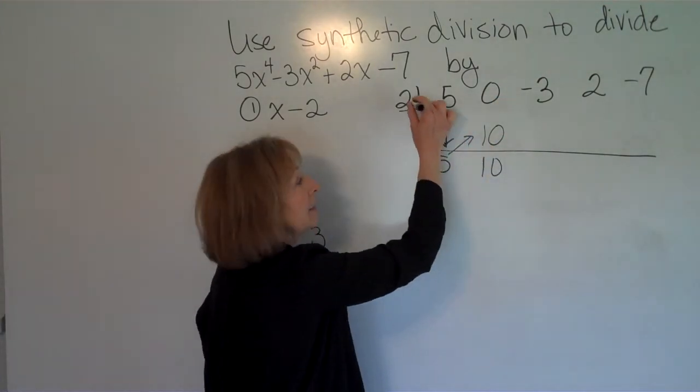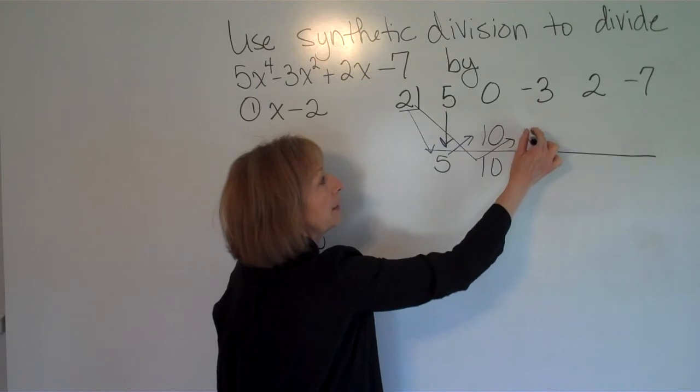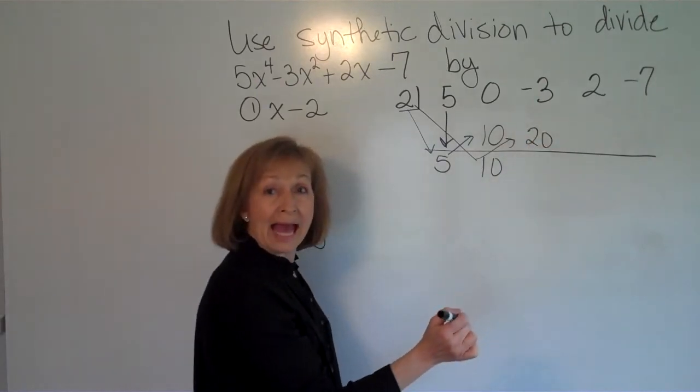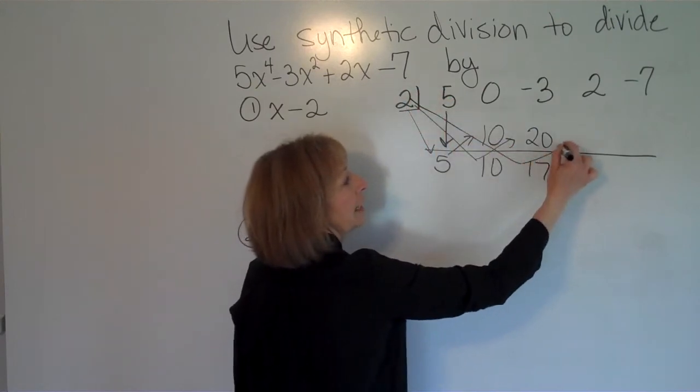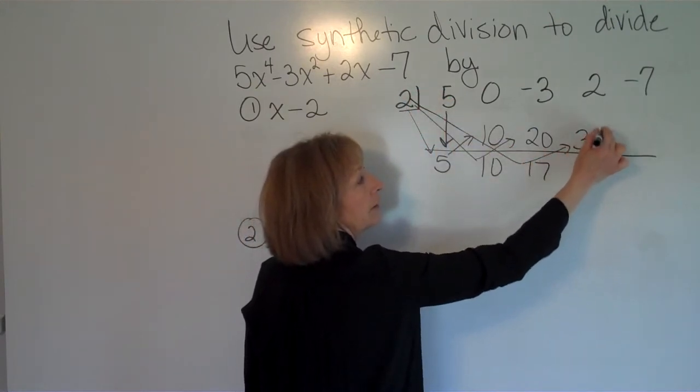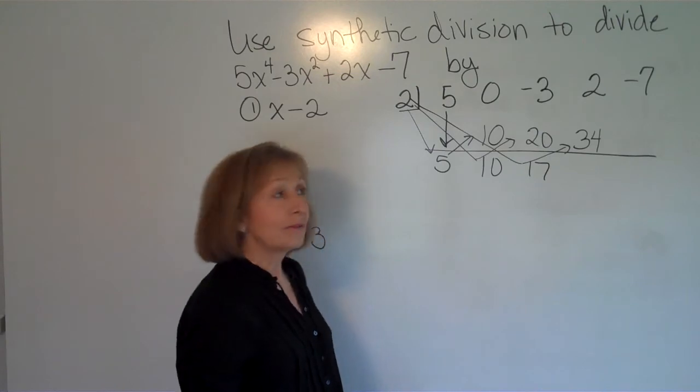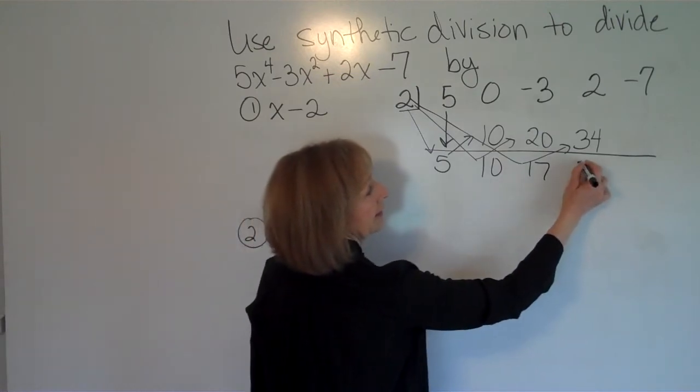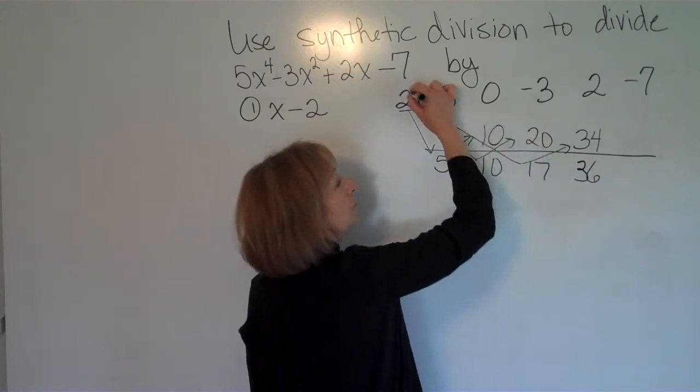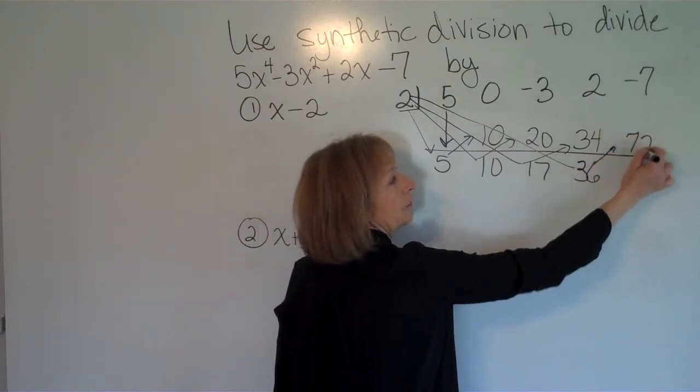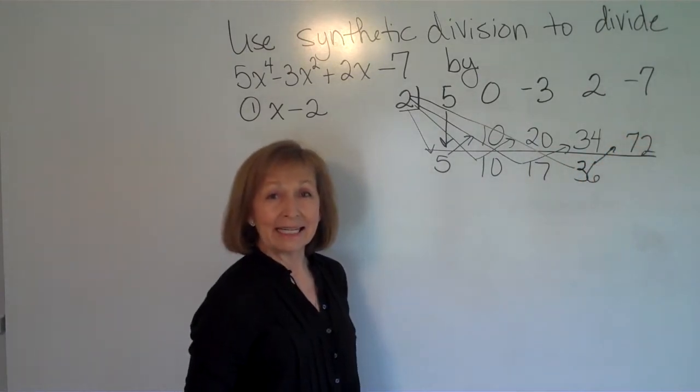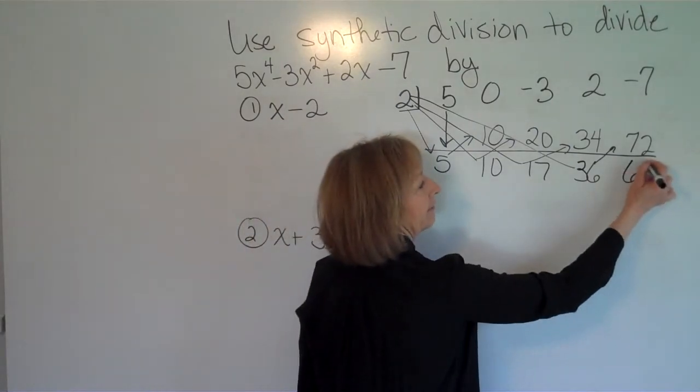Then you multiply. 2 times 10 is 20. And then you add. -3 plus 20 is 17. Then multiply. 2 times 17 is 34. Add. 2 plus 34 is 36. Multiply. 2 times 36 is 72. And then add. -7 plus 72 is 65.